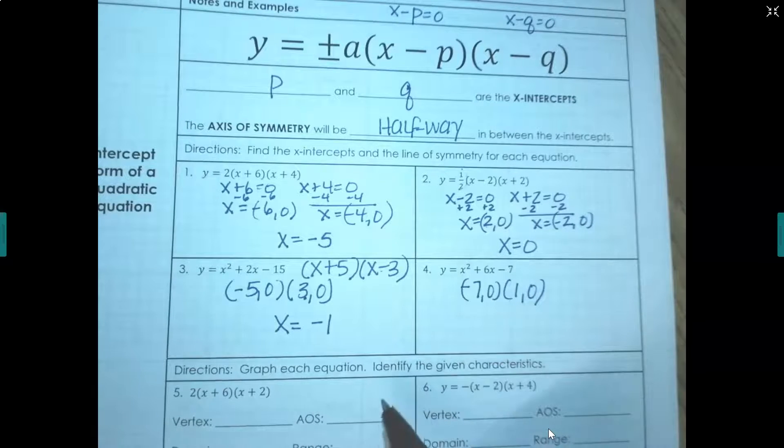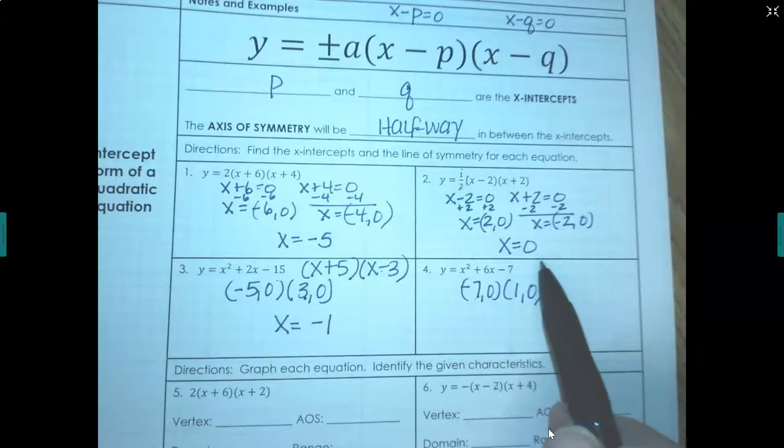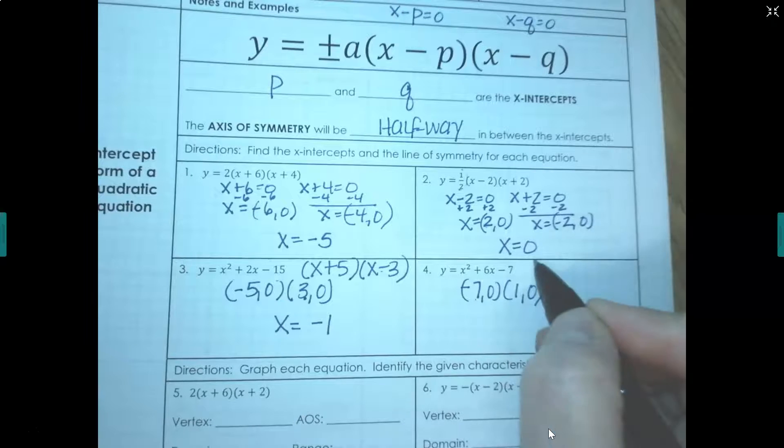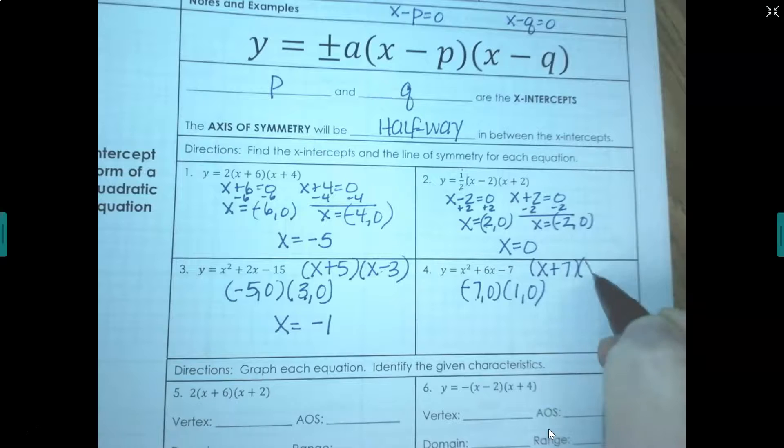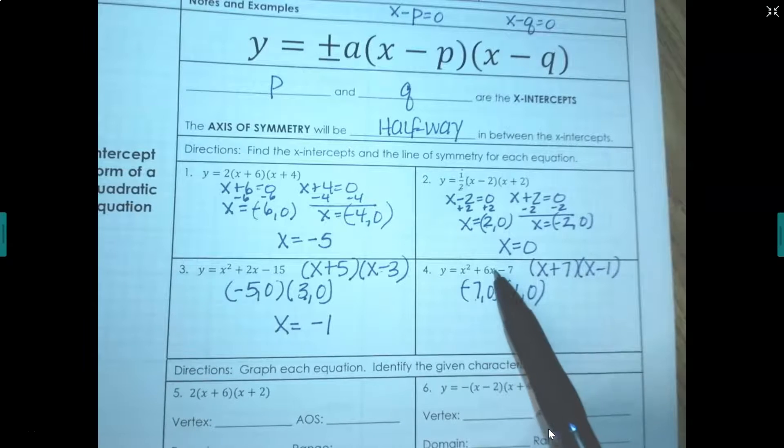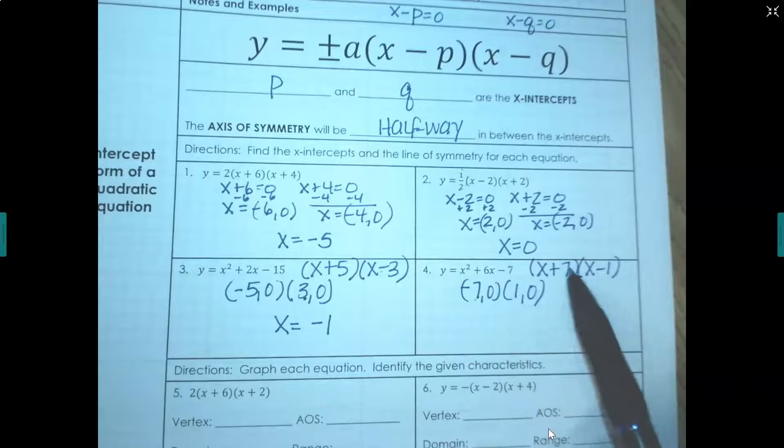I'm just going to write this in intercept form so we can kind of look at it. Remember when we put it back into those parentheses we go opposite. So this is really x plus 7 and x minus 1. So that's just giving you this and this is equivalent. This is the factored form of that.